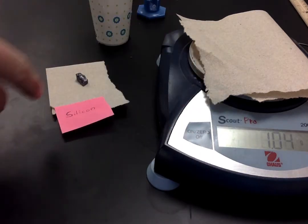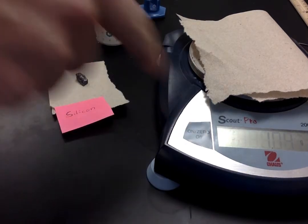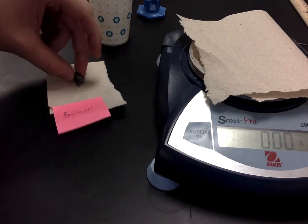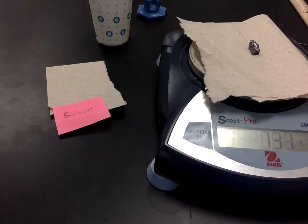And so you can see right now the scale reads 1.04, so I'm just going to zero it. That way the scale won't count the mass of the paper towel when I put the silicon on there. Silicon has a mass of 1.34 grams, so go ahead and write that down on your lab sheet.